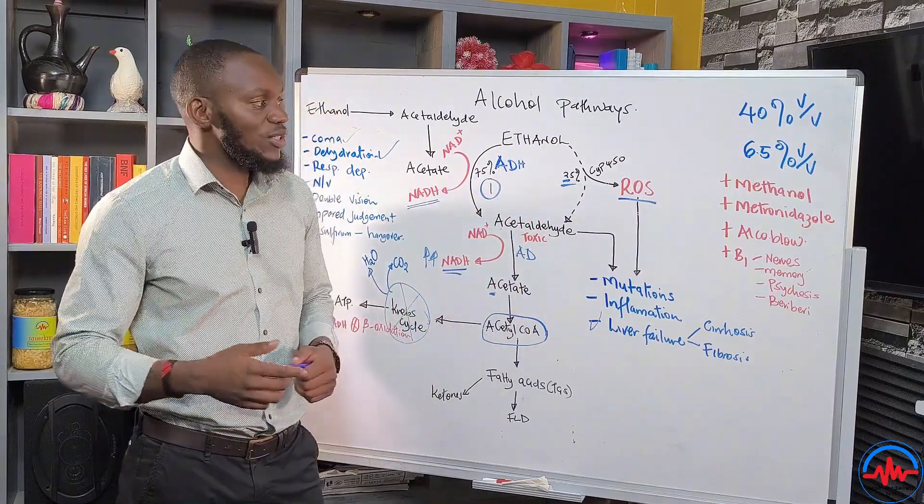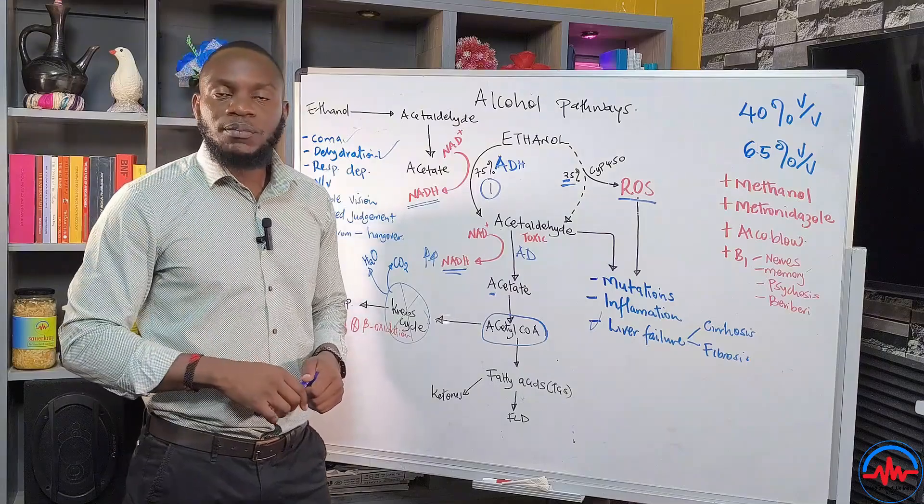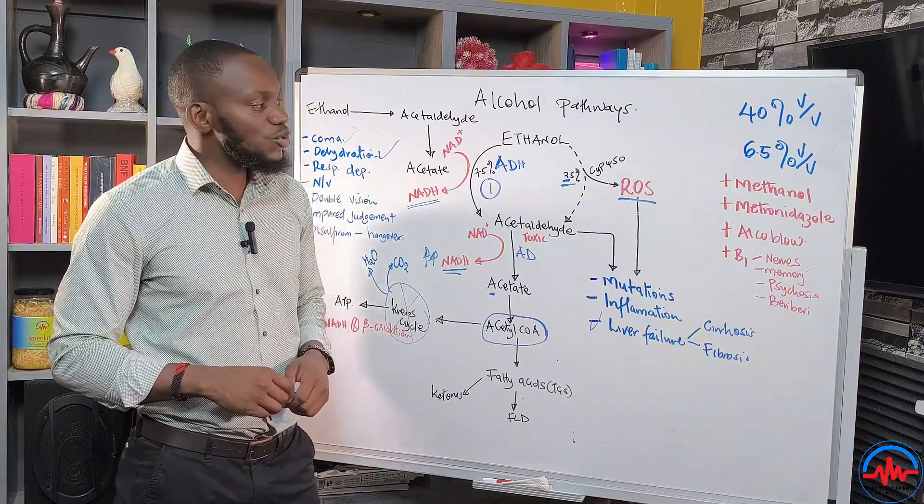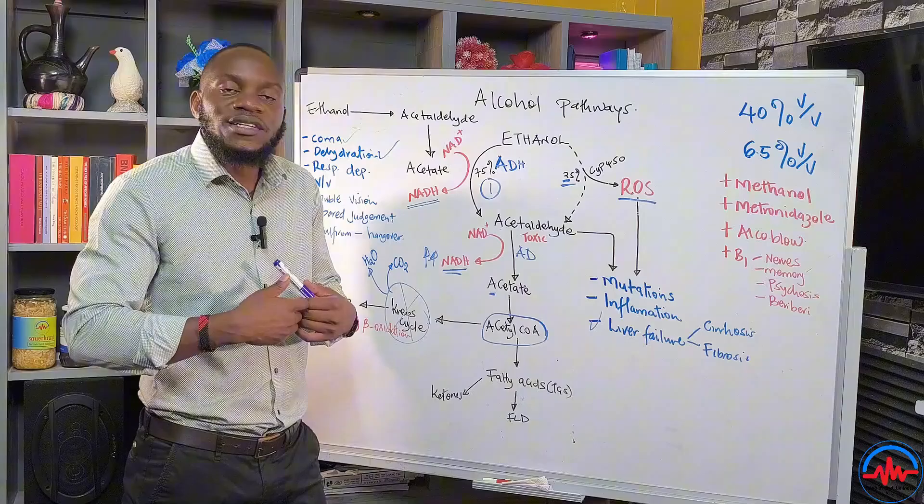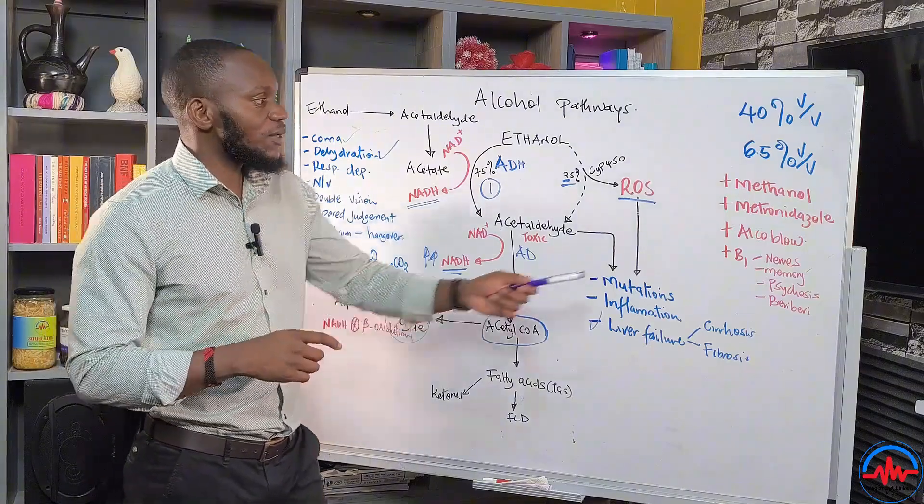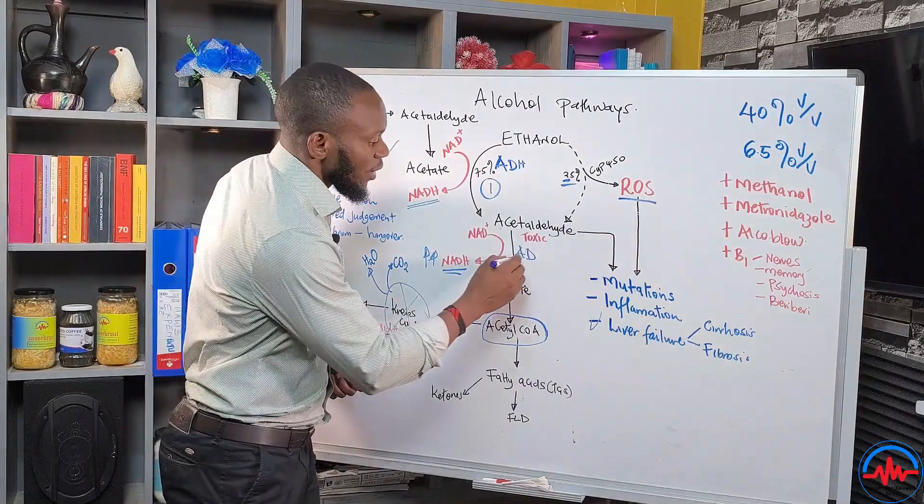Flagyl, or there's a drug called disulfiram, the one that was used to block people from being alcoholics, was used to help people get out of alcoholism. But metronidazole comes and blocks this pathway here.